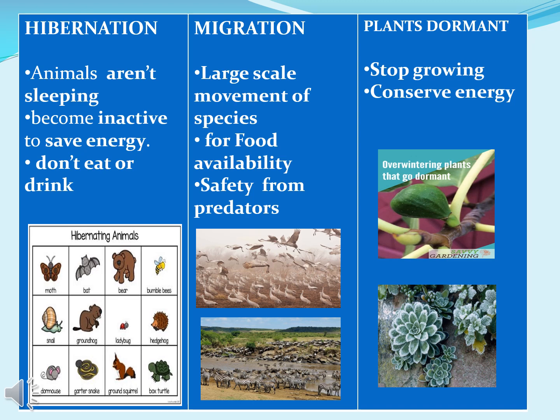In gardening, the term dormancy refers to the plant's state of temporary metabolic inactivity or minimal activity. During dormancy, plants stop growing and conserve energy until better conditions present themselves. This happens naturally as seasons and weather change.